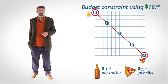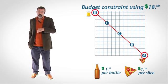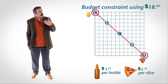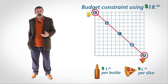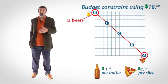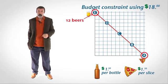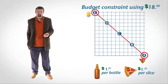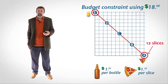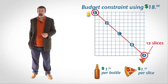Notice the vertical and horizontal intercepts on the graph. The vertical intercept — the point where the budget constraint meets the beer axis — is the amount of beer you could purchase if you spent all of your money on beer. In this case you could buy 12 beers if you spent all of your $18 on beer. The horizontal intercept — the point where the budget constraint meets the pizza axis — is the amount of pizza you could purchase if you spent all of your money on pizza.